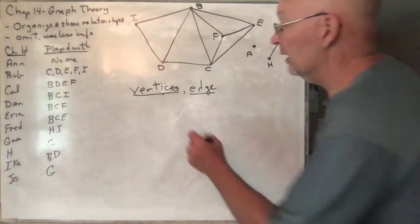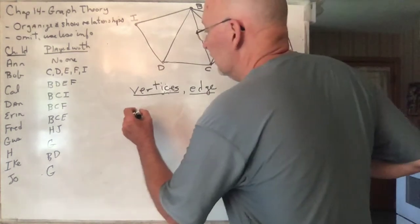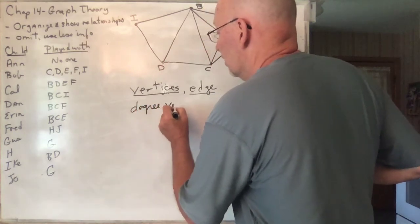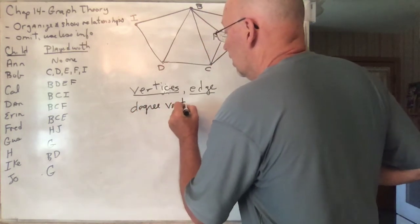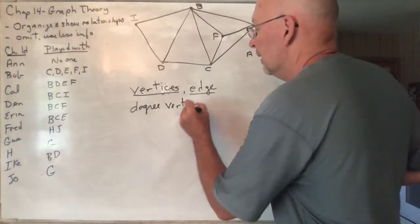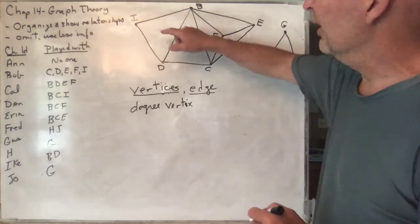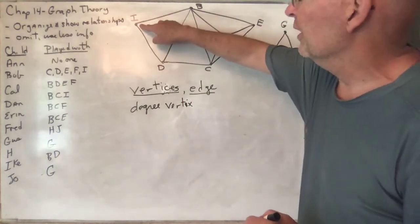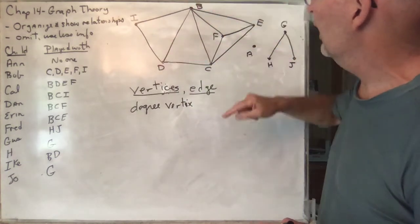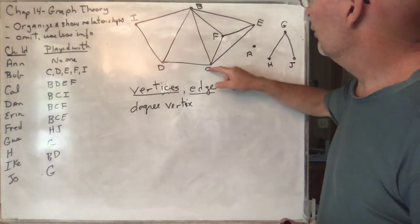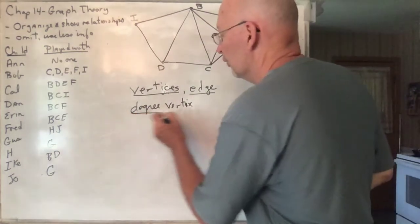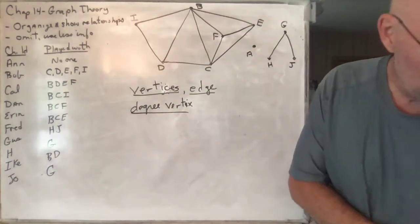The degree of a vertex is just the number of edges that come together at that vertex. So the degree of I is 2. The degree of B is 5. The degree of C is 3, and so on.